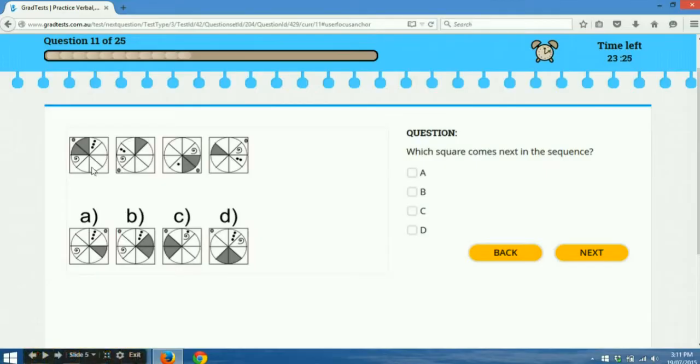You might ask, well, what are the grey segments doing? Well, they're alternating between 2 and 1. So you've got 2, 1, 2, 1, and the positioning is random. So B also complies to that. So B is the correct answer.